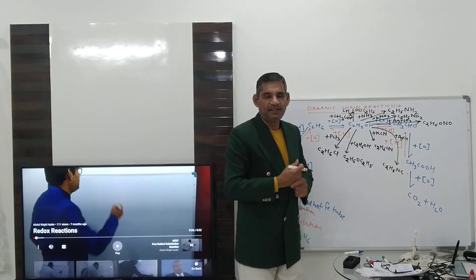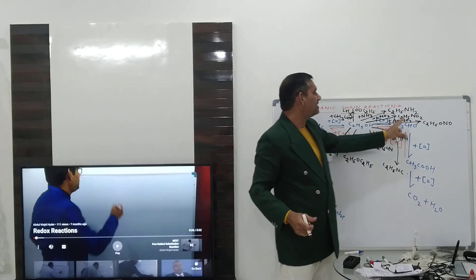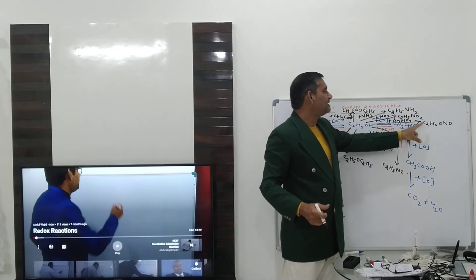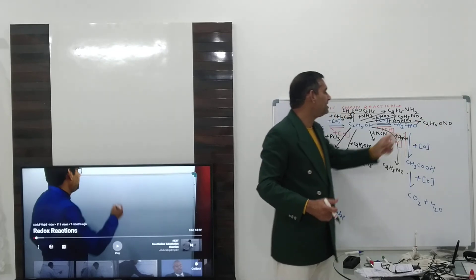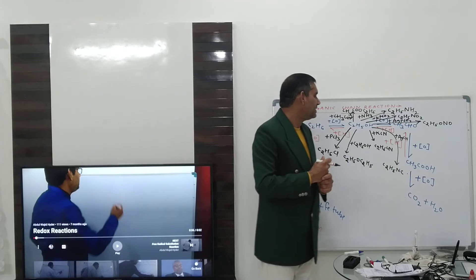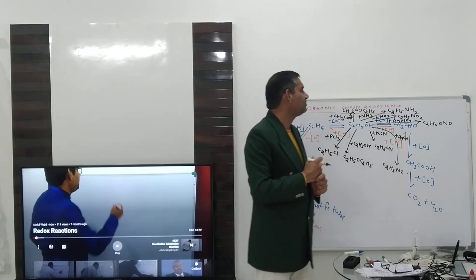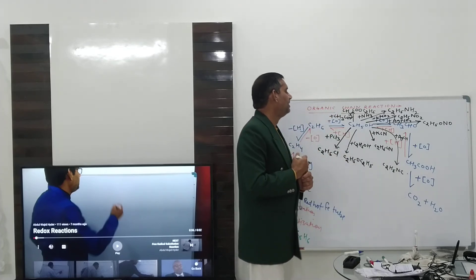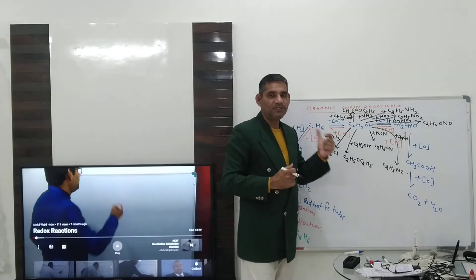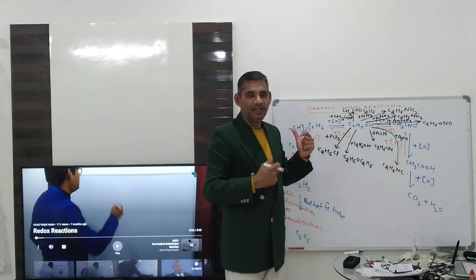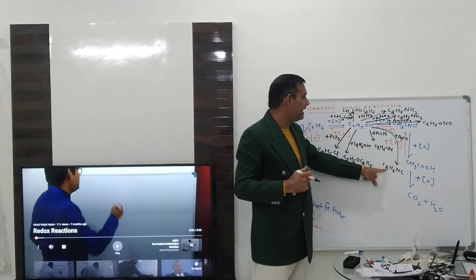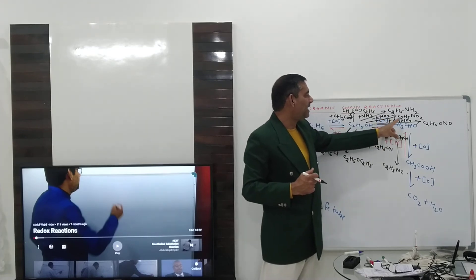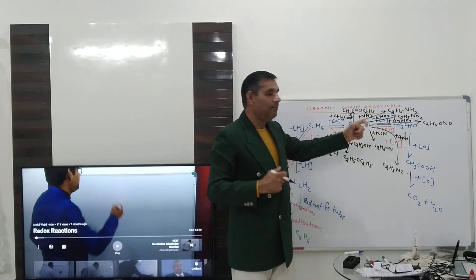ONO is nitrite and NO2 is nitro. This is nitroethane; this is ethyl nitrite. Here nitrogen is trivalent; here it is pentavalent. In this way, all nitrogen-containing compounds in your syllabus are covered: cyanide is covered, isocyanide is covered, nitro is covered, nitrites are covered, amines are covered.